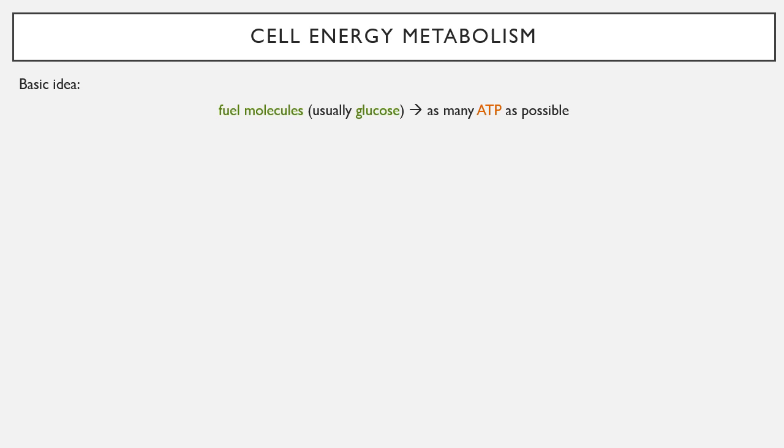The basic problem in cell energy metabolism is how to turn the fuel molecules that a cell has to use into as many ATP as possible. Similar to generating power in our world, cells have to take their glucose, fatty acids, and amino acids and convert those into as many ATP as possible to power their cellular machinery.